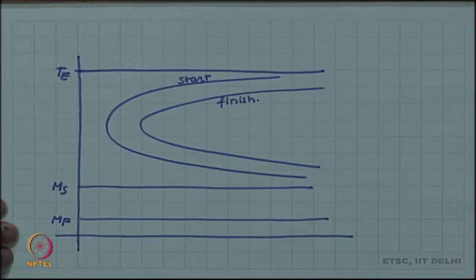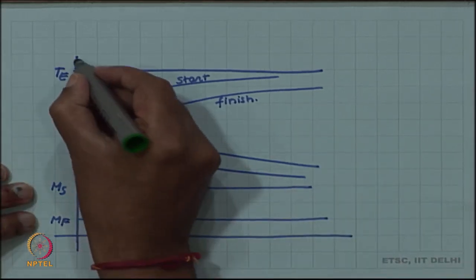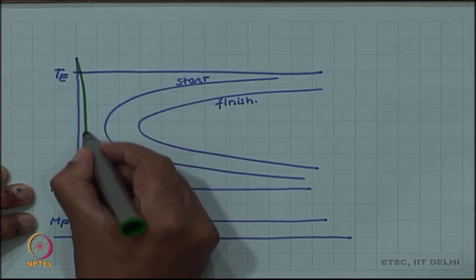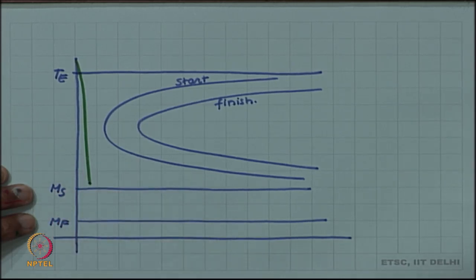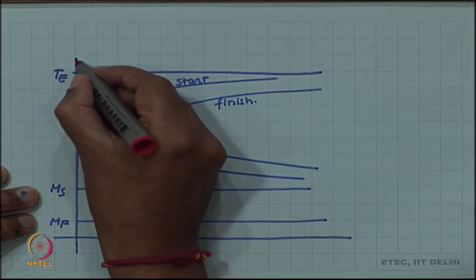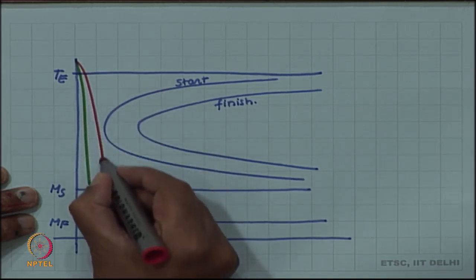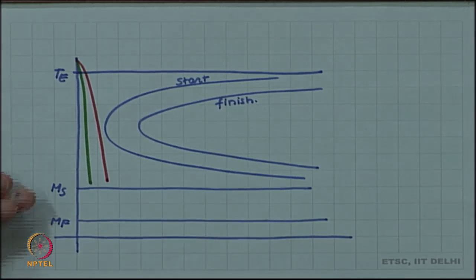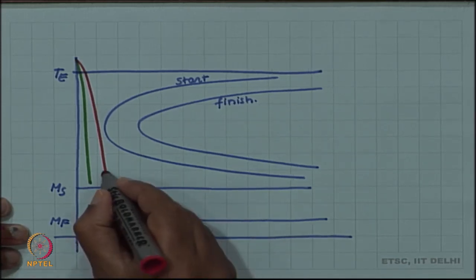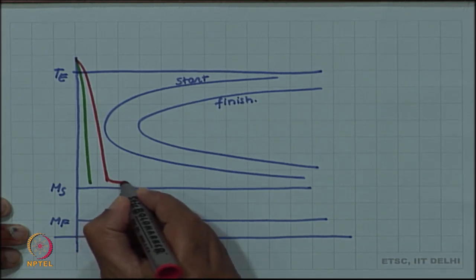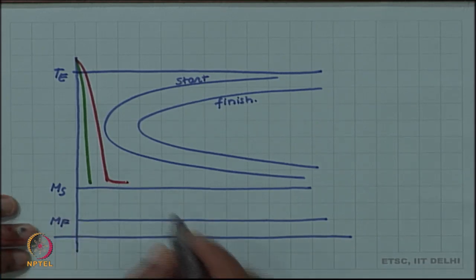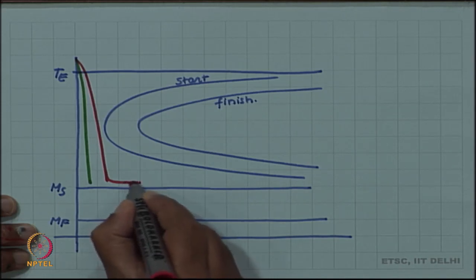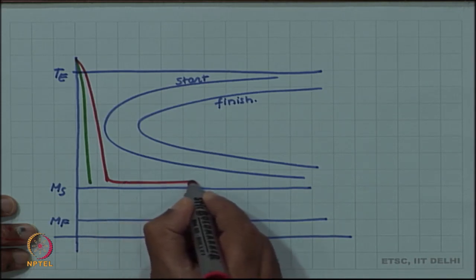What we do is instead of quenching—this was the surface which was cooling faster and this was the inside which was cooling much slowly—now, instead of cooling all the way below Ms and Mf to form martensite, we interrupt the quench here. Our quenchant is held at a temperature above Ms.